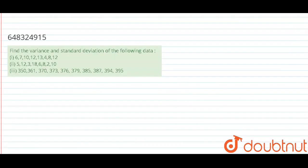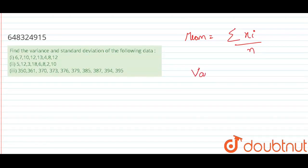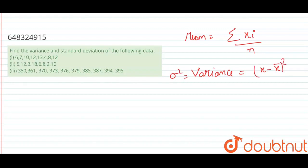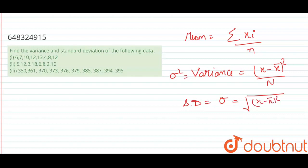In this question, we have to find variance and standard deviation. So, we have to firstly find the mean. Mean is defined as summation of xi upon n. Variance is defined as sigma squared equals summation of (xi minus x-bar) whole square divided by n. And standard deviation is defined as sigma equals root of summation of (x minus x-bar) whole square divided by n.